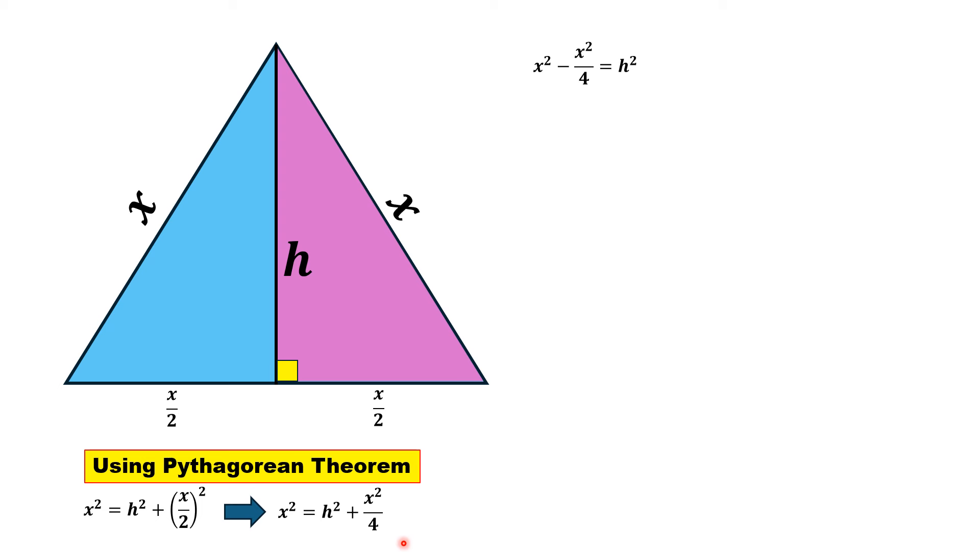If we take x²/4 to the left, we have x² - x²/4 = h². From here, h² = (4x² - x²)/4, and finally h² = 3x²/4, which leads to h = √3x/2. Since it is a length, we neglect the negative root and replace h by √3x/2.